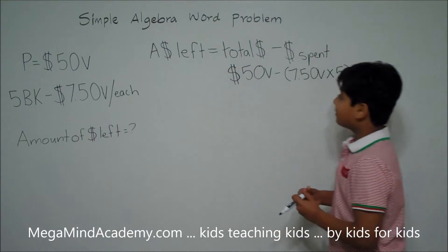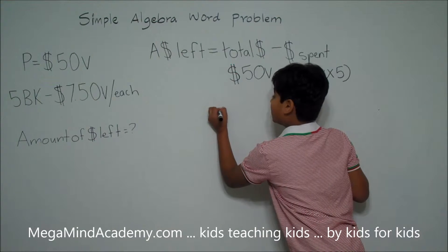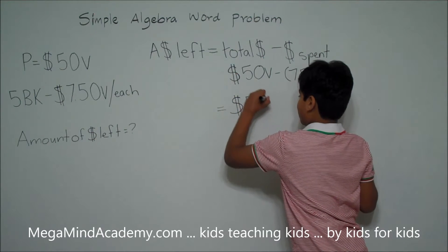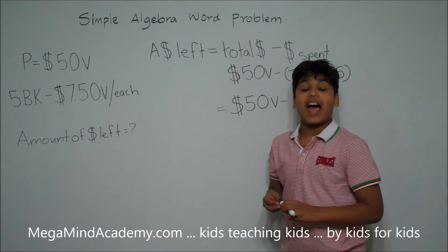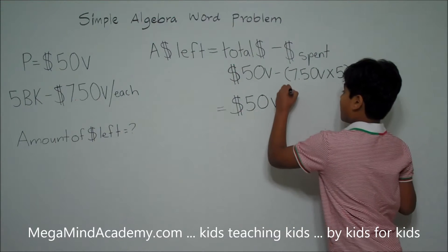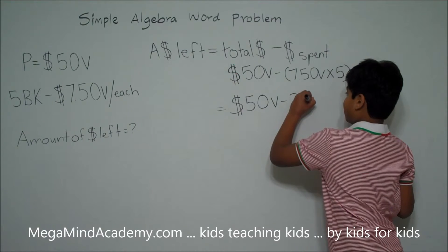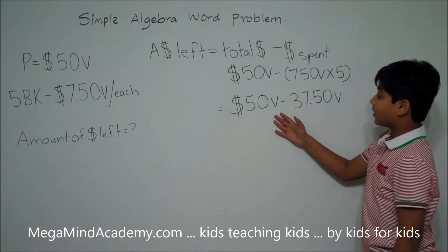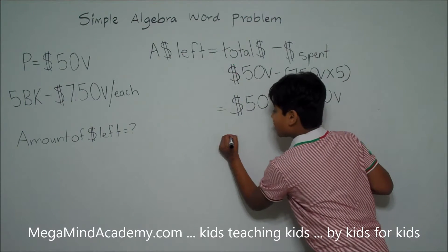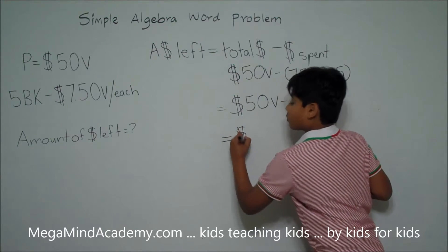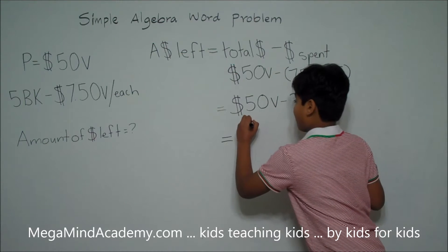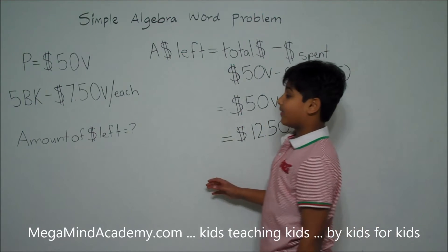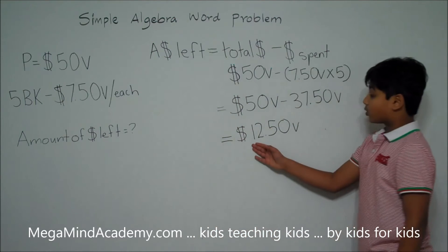So that means the amount of dollars left is equal to 50 V dollars minus 37.5 V dollars, which is equal to 12 and a half V dollars. So that means the amount of dollars left is equal to 12 and a half V dollars.